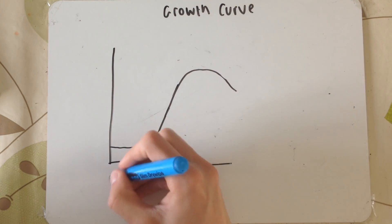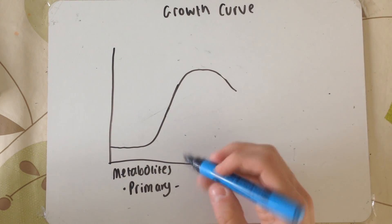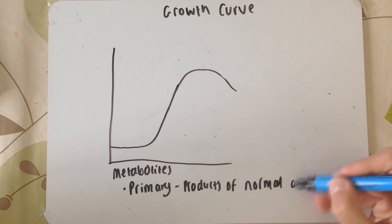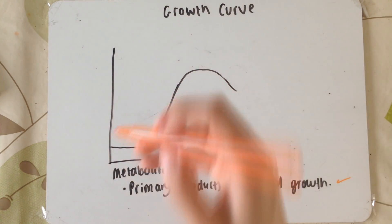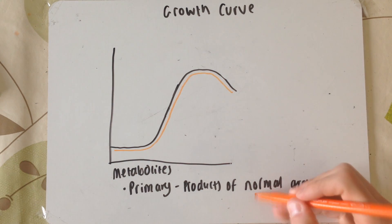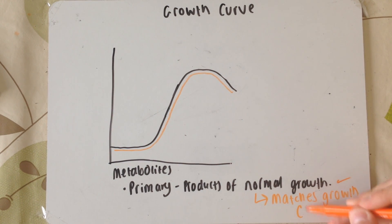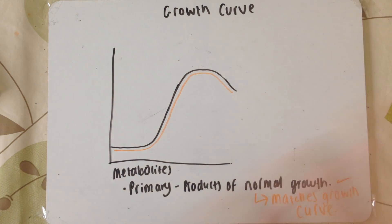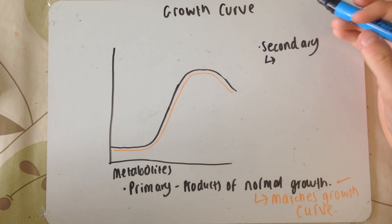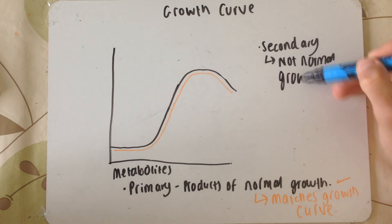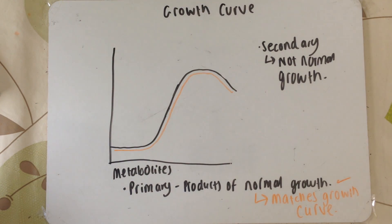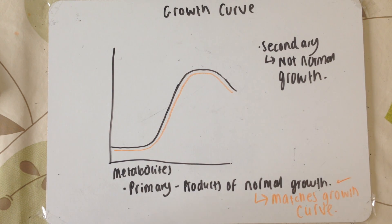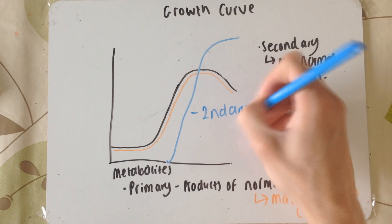So now I'm going to quickly talk about metabolites. Primary metabolites are the products of normal growth — as the population expands, so does the number of metabolites. These include things like proteins used during normal growth and reproduction of the microorganism. During the log phase, this is where the highest rate of primary metabolite production occurs. Secondary metabolites are products and substances produced by the organism that are not part of its normal growth. As you can see, the secondary metabolite curve goes straight through the middle — it doesn't match the growth curve — because these organisms produce harmful, toxic, antibiotic chemicals that put off other bacteria.